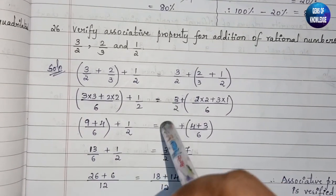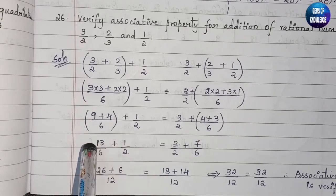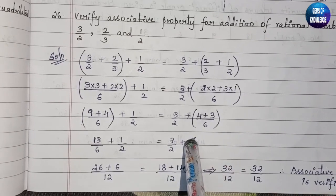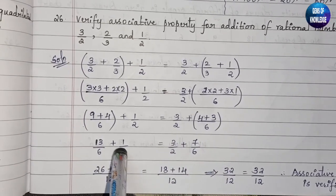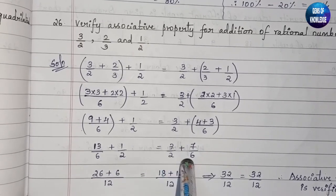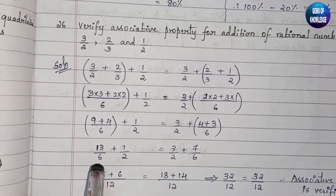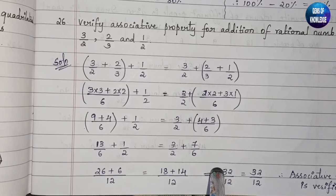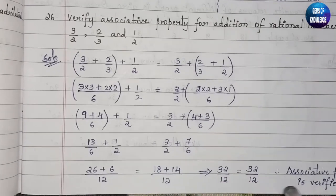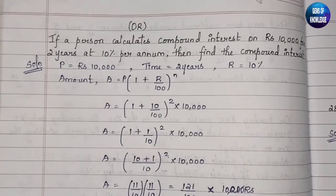Continuing LHS: 13/6 + 1/2 — cross multiplying gives 13×2 + 6×1 over 12, which is 26 + 6 = 32/12. For RHS: 3/2 + 7/6 — cross multiplying gives 6×3 + 7×2 over 12, which is 18 + 14 = 32/12. Both sides equal 32/12, so the associative property is verified.